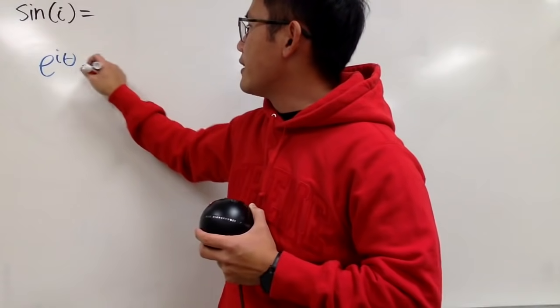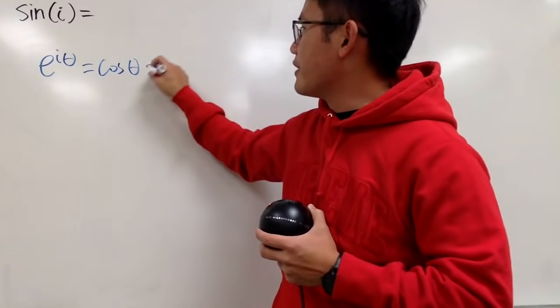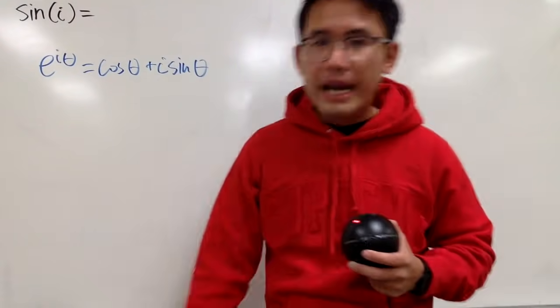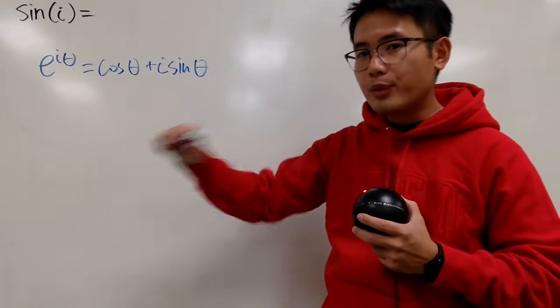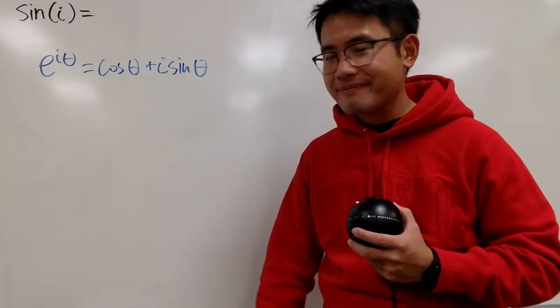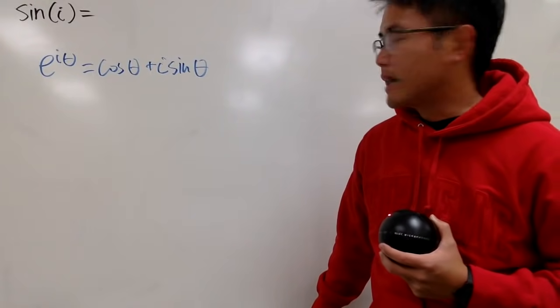Euler's formula says e to the i theta equals cosine theta plus i sine theta. And from here, we are in the complex world, and I want to isolate sine theta. But how can I make that happen?